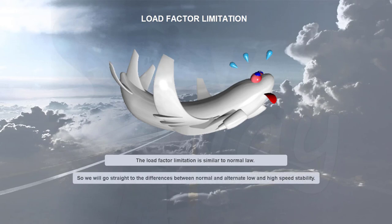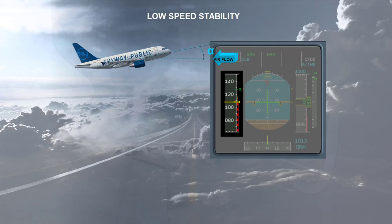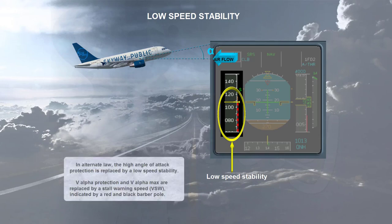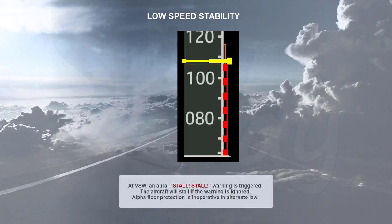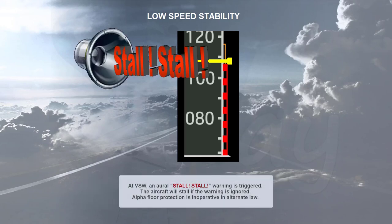We will go straight to the differences between normal and alternate law in high and low speed stability. In alternate law, the high angle of attack protection is replaced by a low speed stability. V-alpha protection and V-alpha max are replaced by a stall warning speed, VSW, indicated by a red and black barber pole. As speed approaches VSW, a gentle progressive nose-down pitch input is introduced to lower the nose and prevent further speed loss. This pitch input can be overridden by pilot input on the side stick. At VSW, an aural stall warning is triggered, and the aircraft will stall if the warning is ignored.